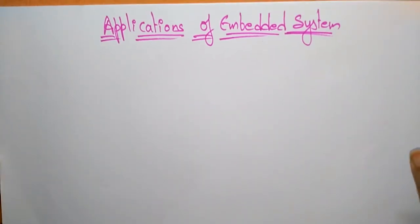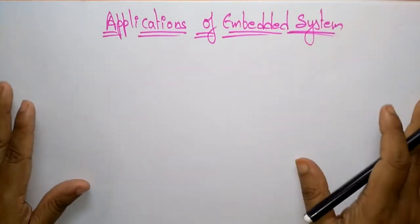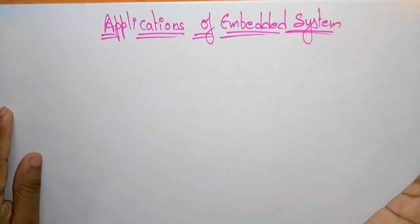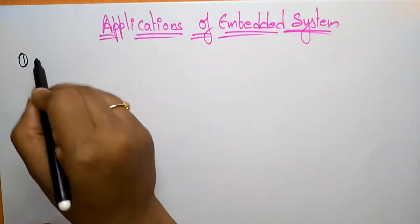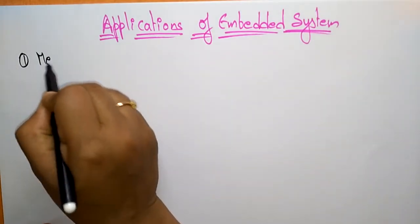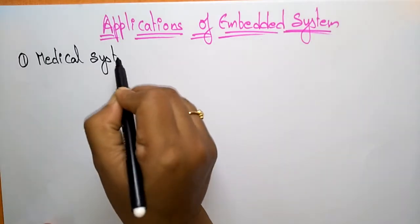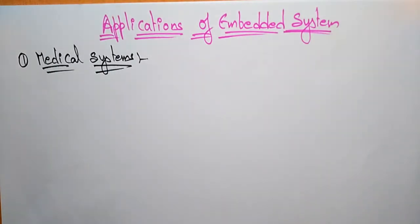Hi students, welcome back. Let's see the different applications of embedded systems. Applications are the different examples of embedded systems — in which areas these embedded systems are used. The first application is medical systems. In medical systems, in which devices do we use the embedded system?